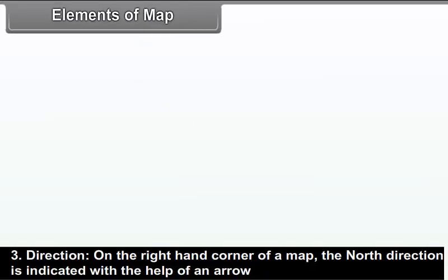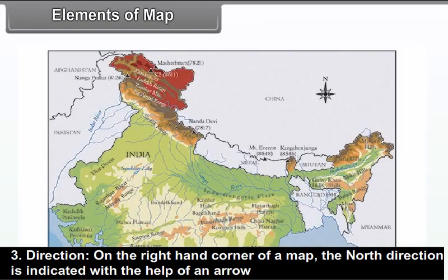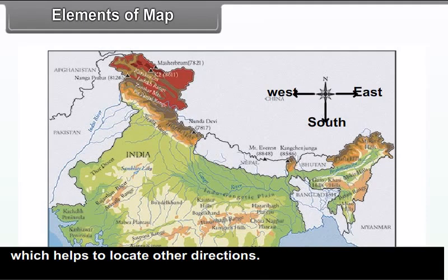Direction: On the right-hand corner of a map, the north direction is indicated with the help of an arrow, which helps to locate other directions.